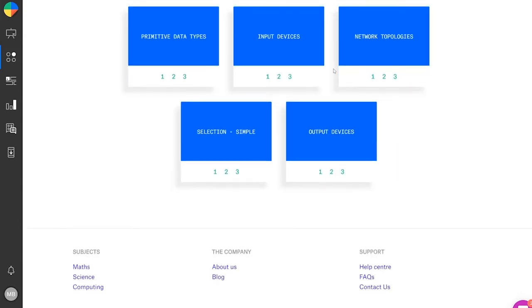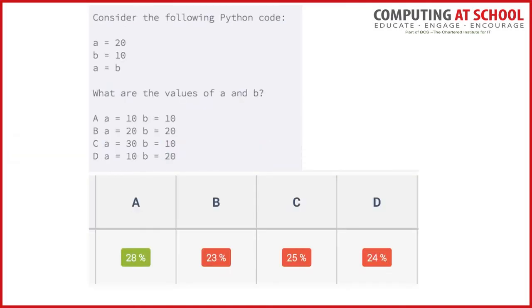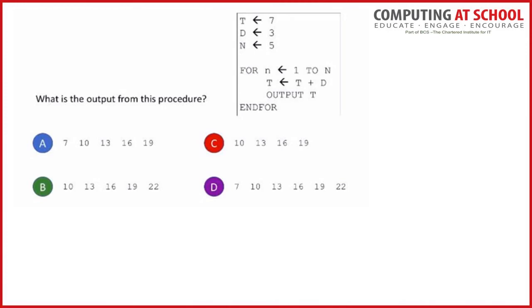The classic question about variable assignment — here's some Python code, what are the values of A and B? It turns out only 28% of students give the correct answer, which is not much better than random chance across four options. We're already seeing, without doing the Rasch analysis, where common misconceptions lie among students learning computing in English schools. This is perhaps one area where we're not teaching how variables work particularly well — maybe we're using the shoebox analogy, and actually it's more complicated than that. We have similar issues with code tracing.